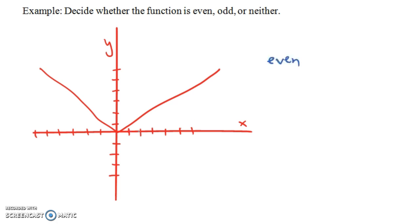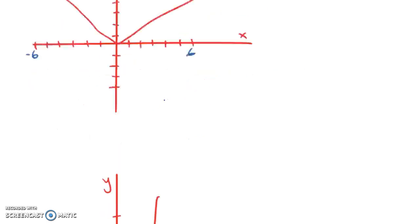Notice, if we look at what's f of 6 and what's f of minus 6, you should get the same number as an output. f of 6 and f of minus 6 both give us the same output. This is an even function.